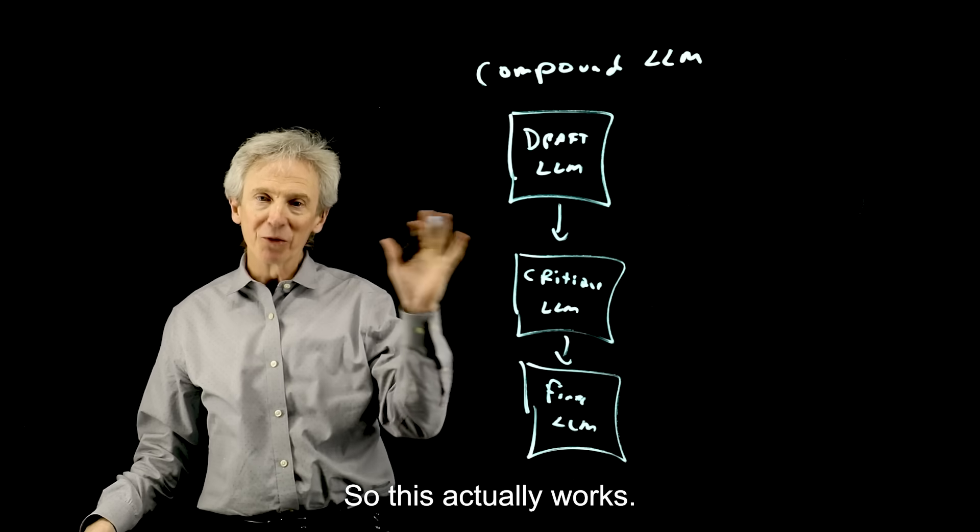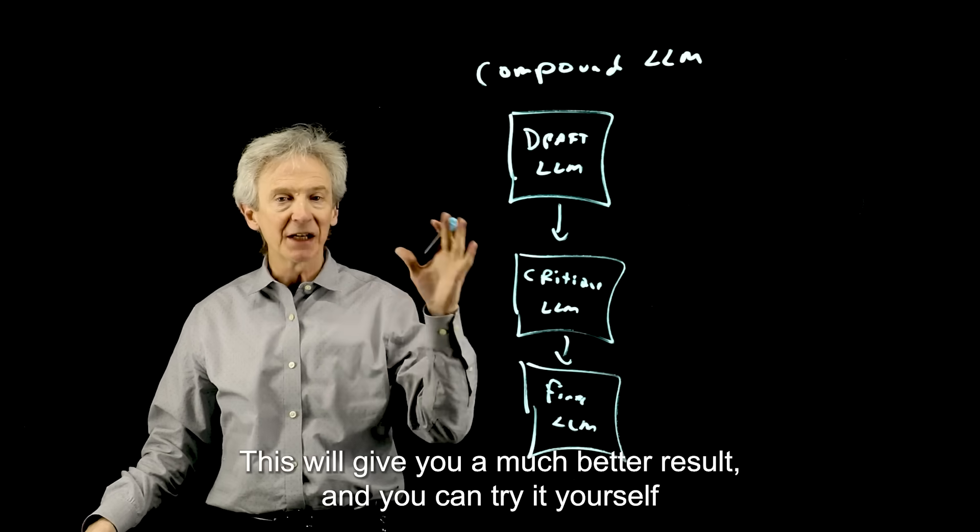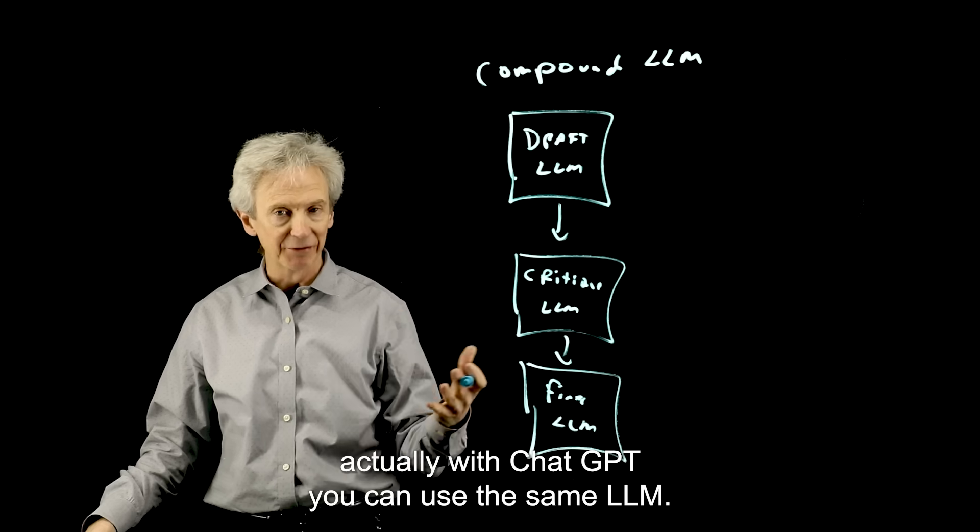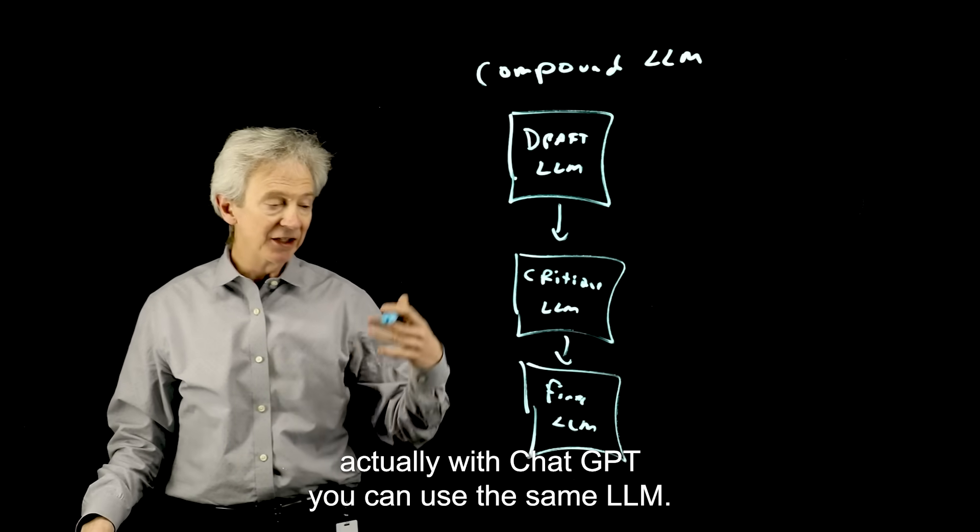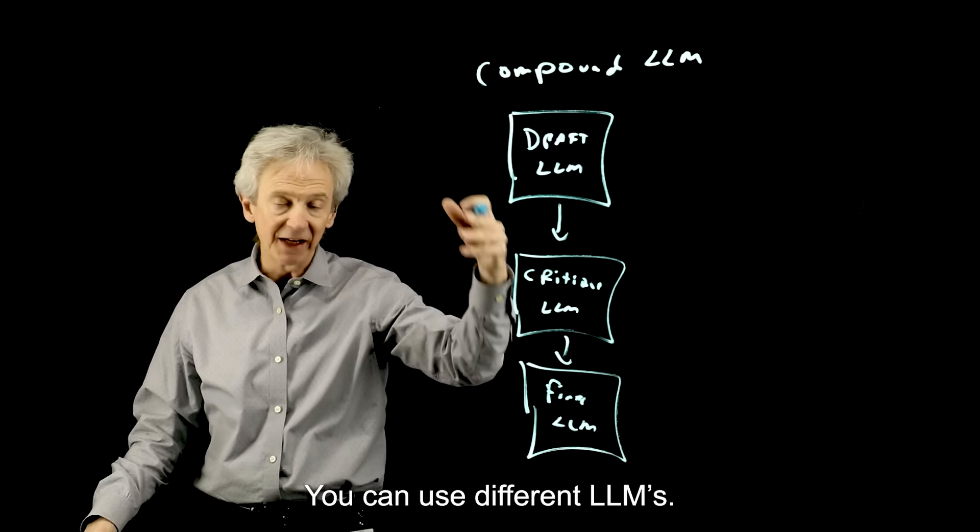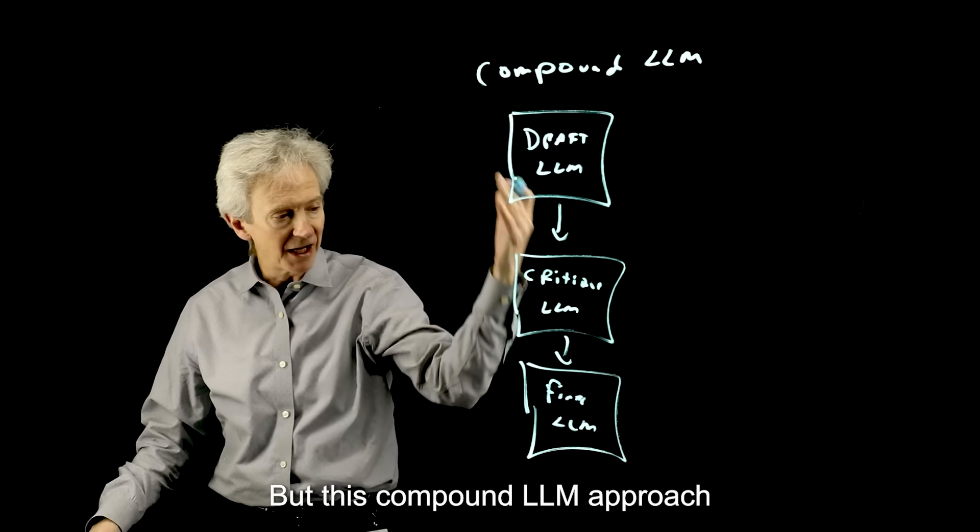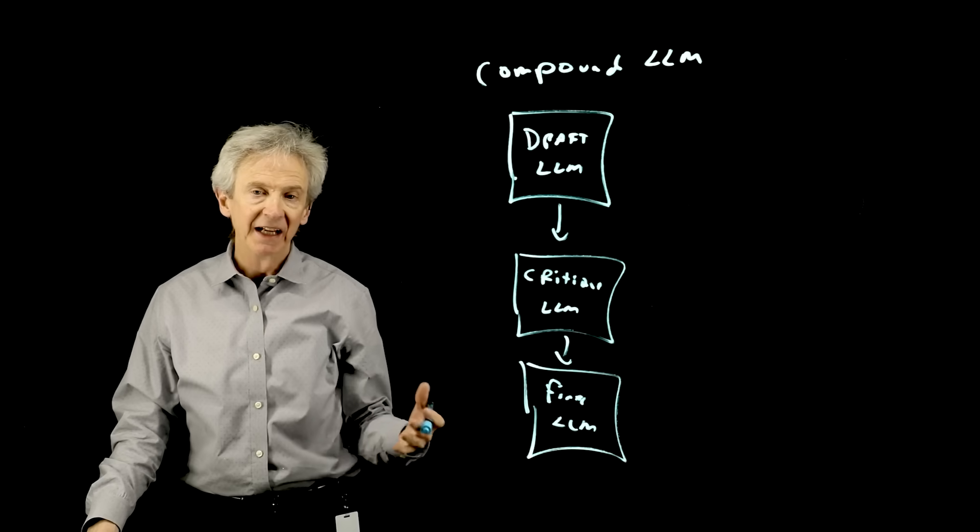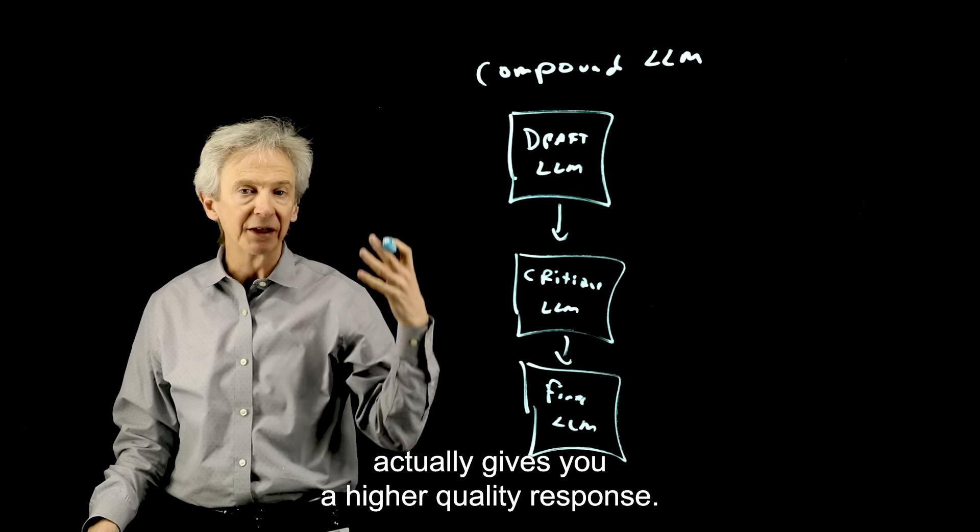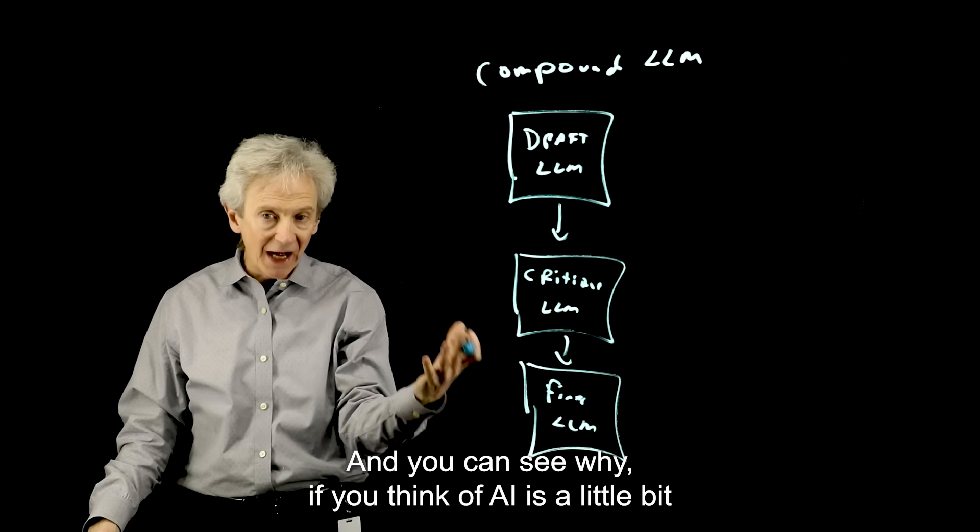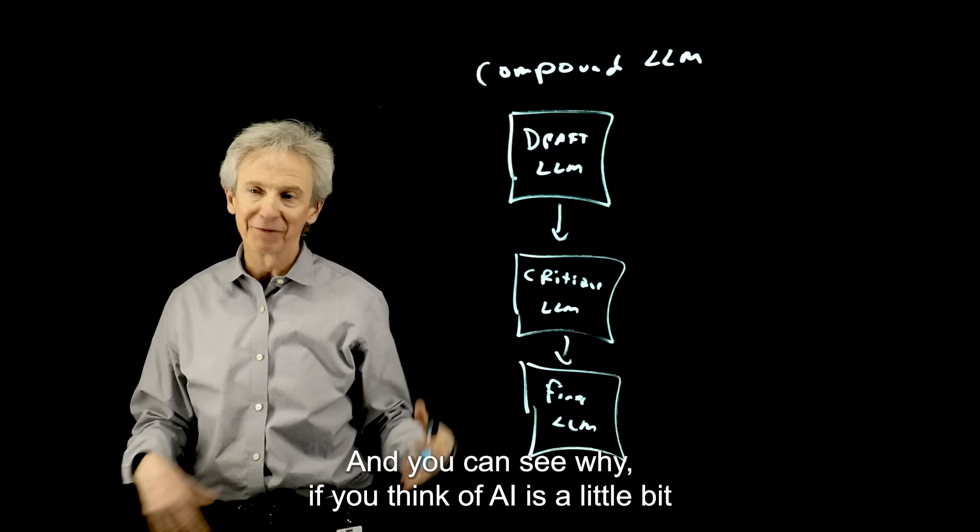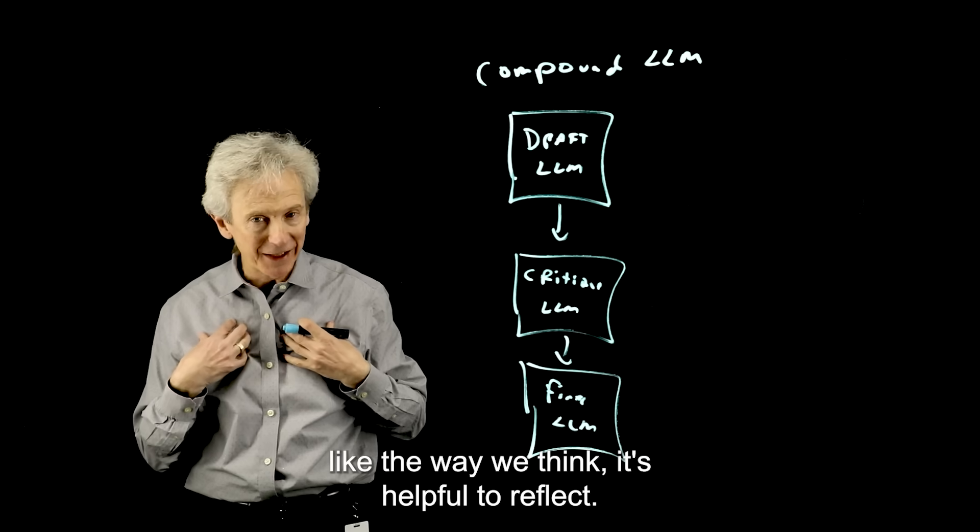So this actually works. This will give you a much better result. And you can try it yourself, actually, with ChatGPT. You can use the same LLM, you can use different LLMs, that might give you a different variety, different perspective. But this compound LLM approach actually gives you a higher quality response. And you can see why, if you think of AI as a little bit like the way we think.